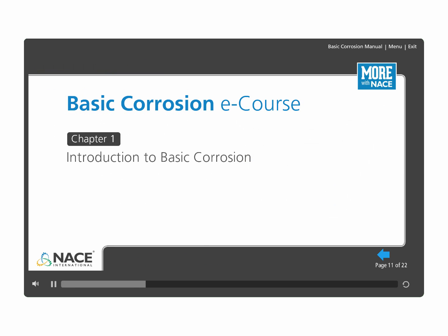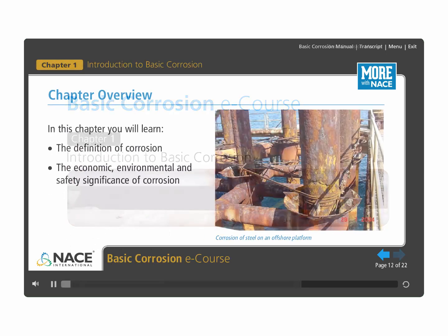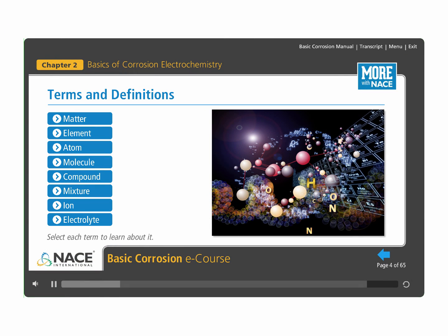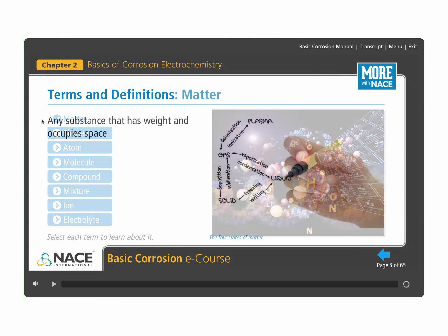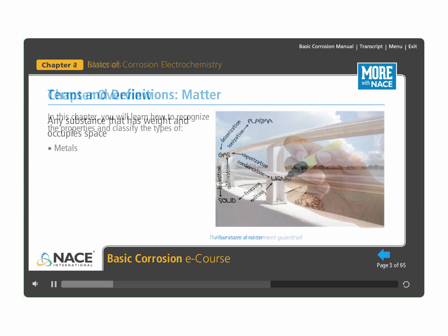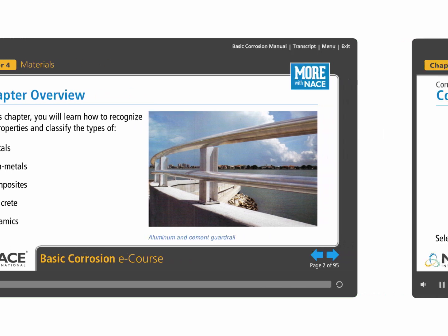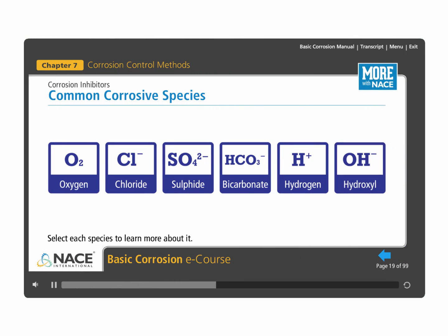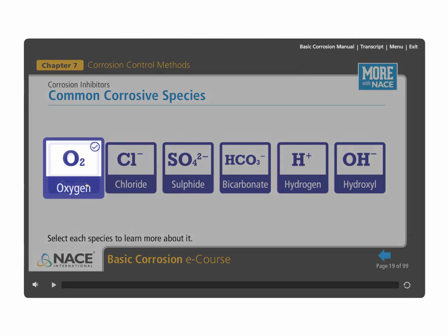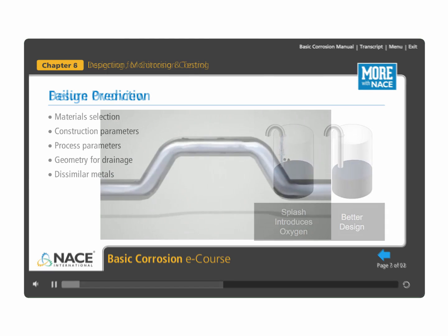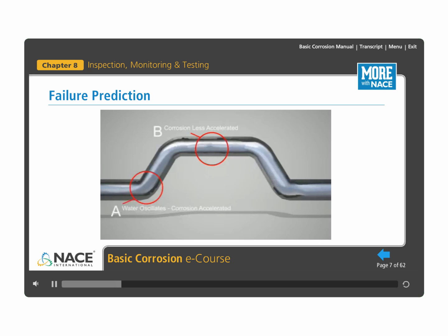Like the classroom version, the Basic Corrosion eCourse focuses on the causes and types of corrosion and how to recognize them. You will learn to understand electrochemical processes and concepts and how they relate to the formation of corrosion. You will be able to recognize the properties and types of metals, non-metals, composites, concrete and ceramics used to control corrosion by material selection. While gaining an understanding of corrosion control methods such as design, environmental modification, cathodic and anodic protection and protective coatings, you will also learn about the most widely used inspection, monitoring and testing techniques.